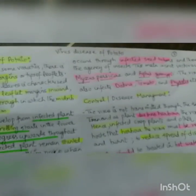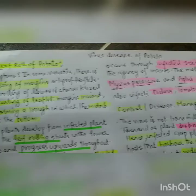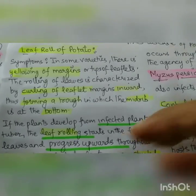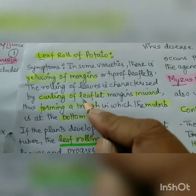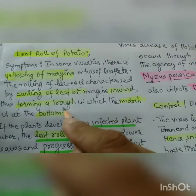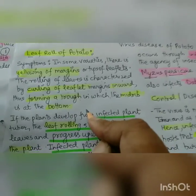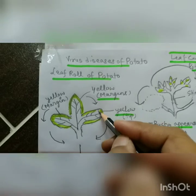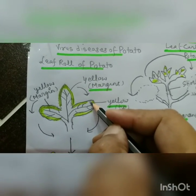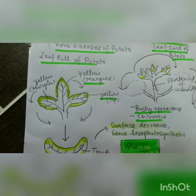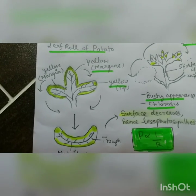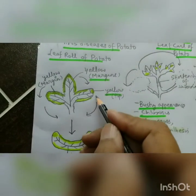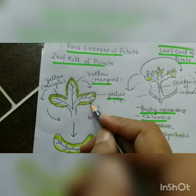Now we are coming to the last set of diseases — the virus disease of potato: leaf roll of potato. Symptoms: in some varieties there is yellowing of margins and tips of leaflets. The rolling of leaves is characterized by the curling of leaflet margins inward, forming a trough in which the midrib is at the bottom. The first symptom of leaf roll is yellowing of margins and tips, after which they start rolling inwards and form a trough.